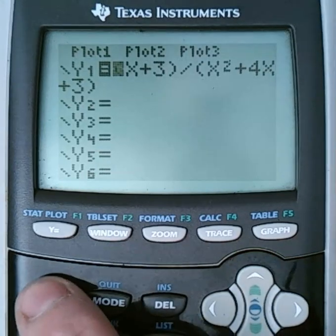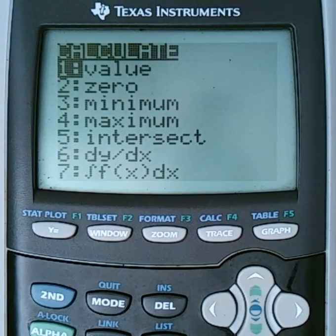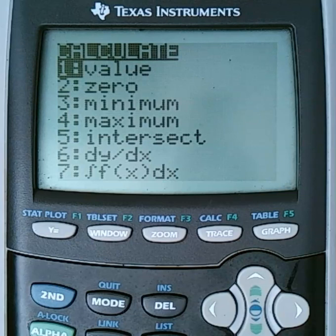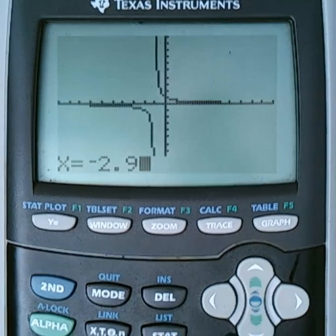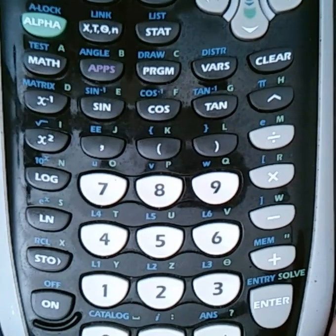So what we're going to do instead is we're going to go to the calculate menu, and we're going to use this value function, which is option one. So you're going to press enter, and I'm going to put negative 2.9. And real quick, I want to make sure you understand. I'll slide my calculator up here.